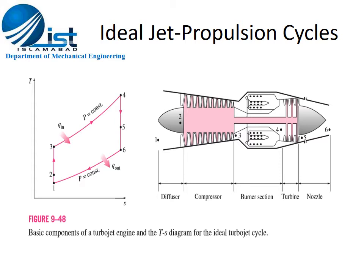From process 5 to 6, the air may or may not be further heated in an afterburner by adding further fuel. The air is then accelerated and exhausted through the nozzle. This completes the ideal cycle for the jet engine.